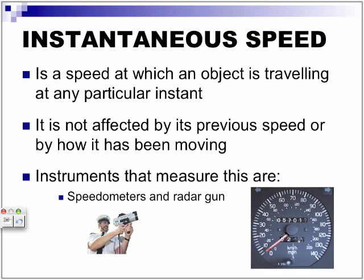Instantaneous speed is the speed at which an object is traveling at any particular instant. It is not affected by its previous speed or by how it has been moving. So, instruments that measure instantaneous speed: speedometer or a radar gun. So, if we look at these two, these are the only ways we can actually really calculate an instantaneous speed. We have the police officer who might be trying to catch speeders at that particular moment. And if you're looking within the car, whatever speed is being shown, wherever the speedometer meter that the actual ticker is actually showing at, that's really the actual instantaneous speed of an object.